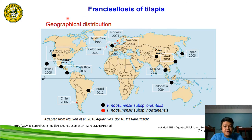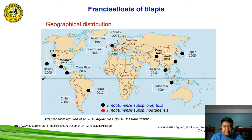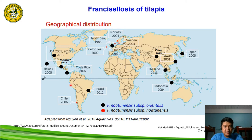This is the geographical distribution of francisellosis, particularly Francisella noatonensis orientalis (FNO) and Francisella noatonensis noatonensis. The most common pathogen is FNO, which is worldwide in distribution, present in Southeast Asia, China, Japan, Europe, Latin America, and North America.